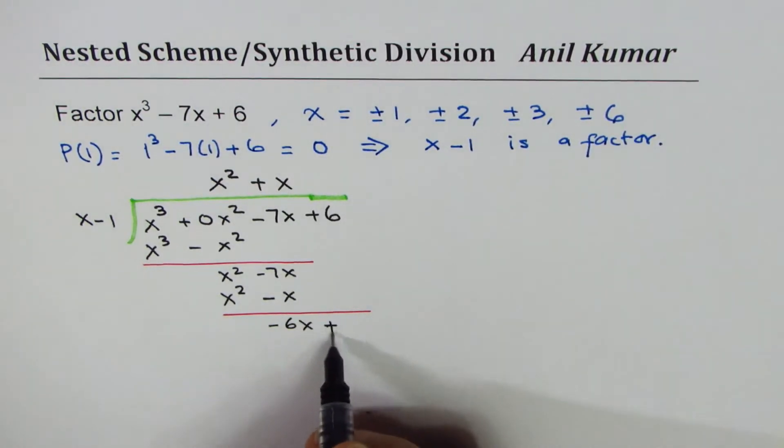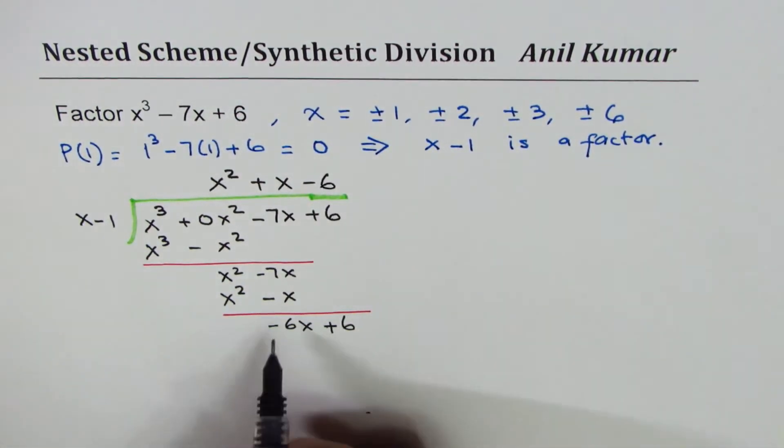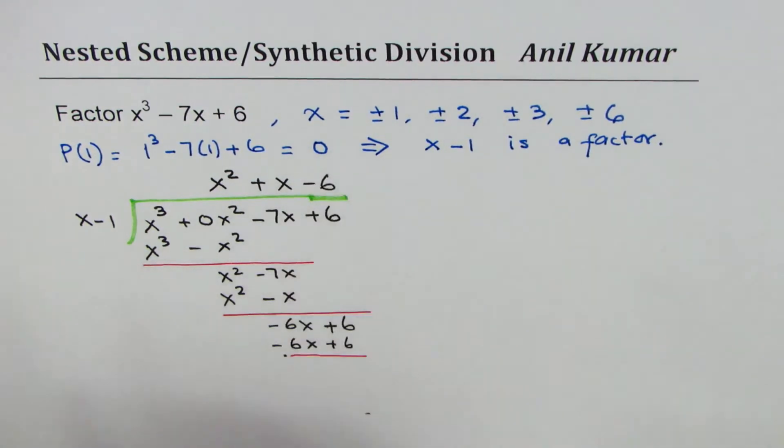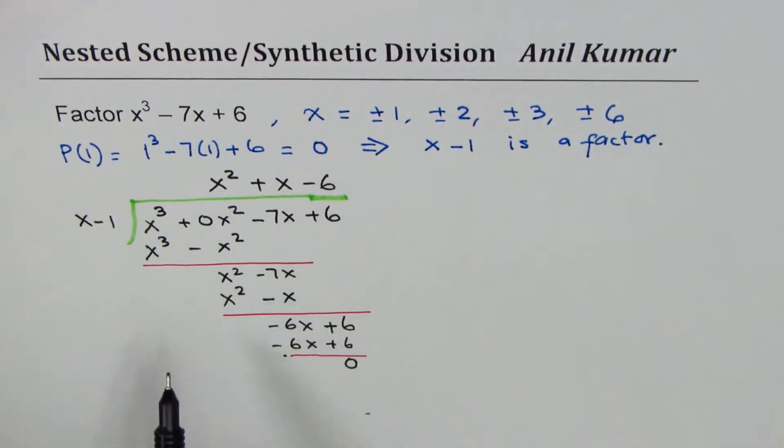Bring down 6 plus 6. Leading coefficient is minus 6, when you multiply by minus 6 the first term can cancel. And in this case, since the remainder has to be 0, we found that x minus 1 gives a remainder of 0.